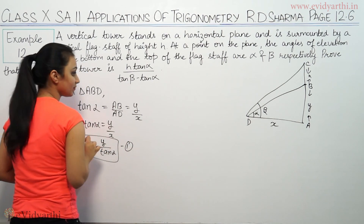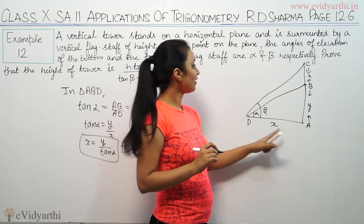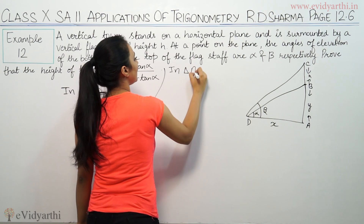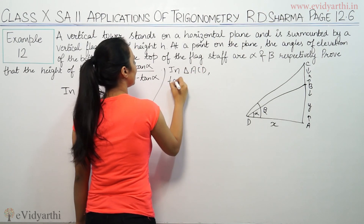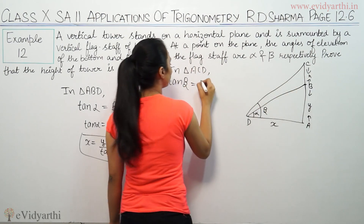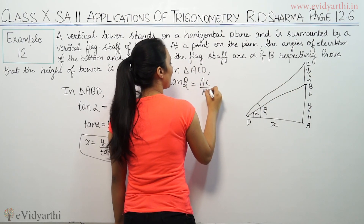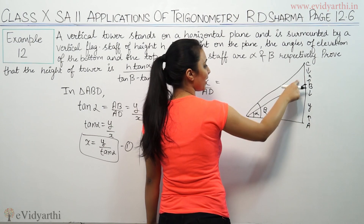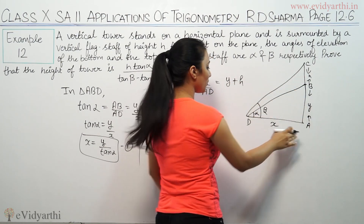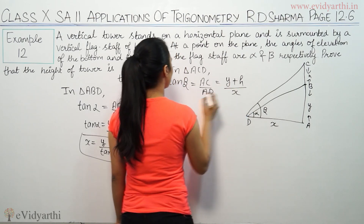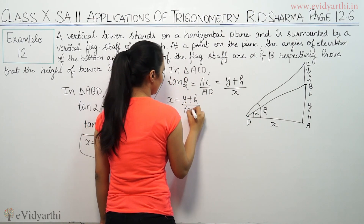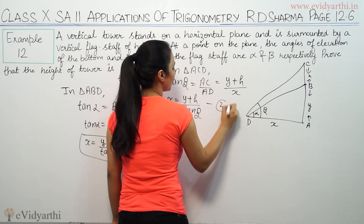Next, in triangle ACD, tan beta equals AC upon AD. AC equals y plus h, because we add the tower height y and the flagstaff height h. AD equals x. So tan beta = (y + h) / x, which gives us x = (y + h) / tan beta. This is the second equation.